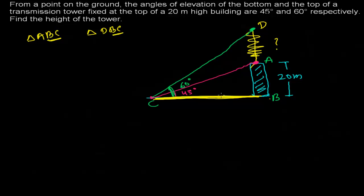First, we need to find out the height AD. We cannot find AD until we know BD. To find BD, we need at least two things — either two sides or one angle and one side. Only one thing is given for the larger triangle: the 60-degree angle of elevation. So we need one more side — either CD or BC. The question gives us a clue: BC is related.